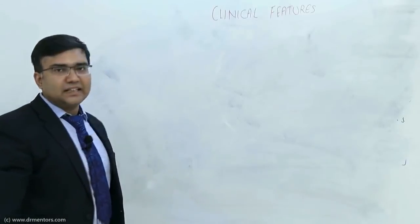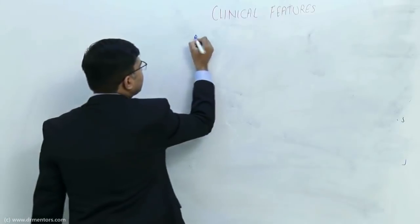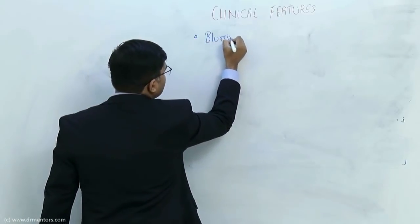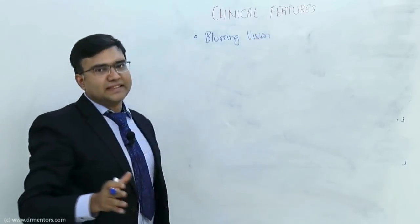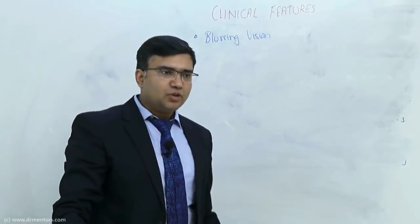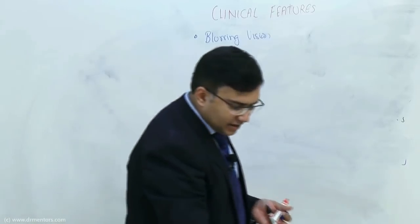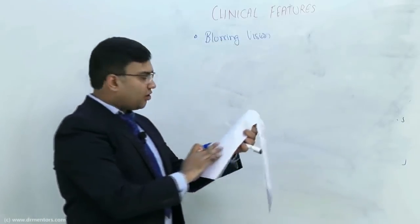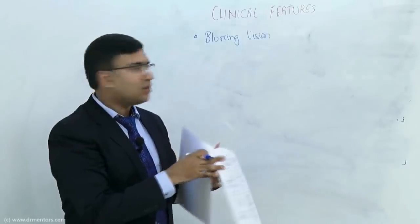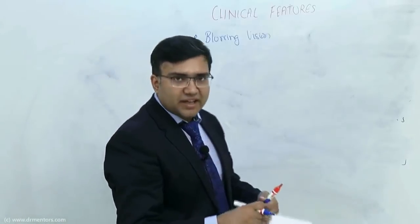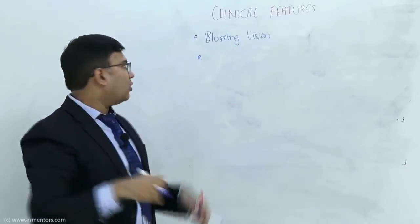Now we come to the clinical features of cataract. First is blurring of vision — the patient would say their vision quality is not good. For example, when they see a white page it appears a bit yellowish. This is blurring of vision. Around lights, they would also see halos.